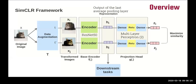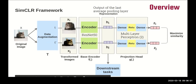Here we see an overview of the SimCLR framework. We start on the left with an original image X. Then we draw two transformations from a pool of augmentations, big T, and apply them to the original image. That gives us two augmented versions of the same image, X-i and X-j, which form our positive pair.